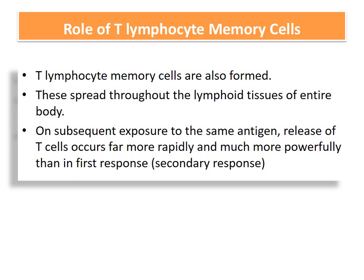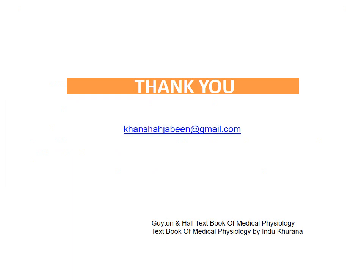Just as in humoral immunity, some T cells remain dormant as memory cells, spreading throughout the lymphoid tissue of the entire body. On subsequent exposure to the same antigen, these memory cells activate and mount a secondary response — which is more powerful, intense, potent, and enhanced than the primary response. This concludes the lecture; the instructor's email is available for queries along with the reference textbook.